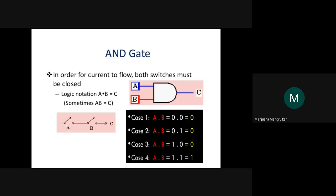Third condition: A is closed, B is open, again C is zero. Fourth condition: A and B both closed — A equals one, B equals one — so C equals one. AND is a multiplication operation. If any one input is zero, output is zero. Both inputs must be one for output to be one. The logical notation is C equals A dot B.